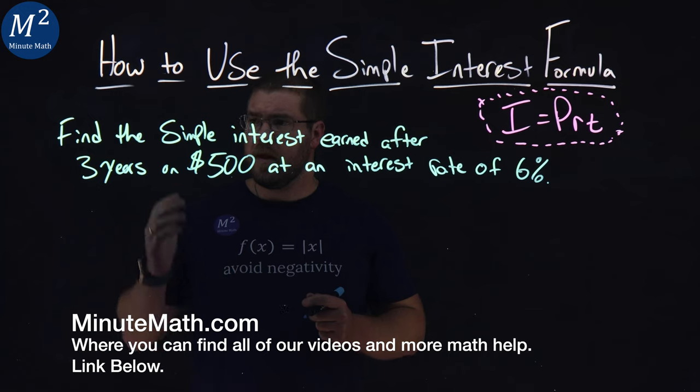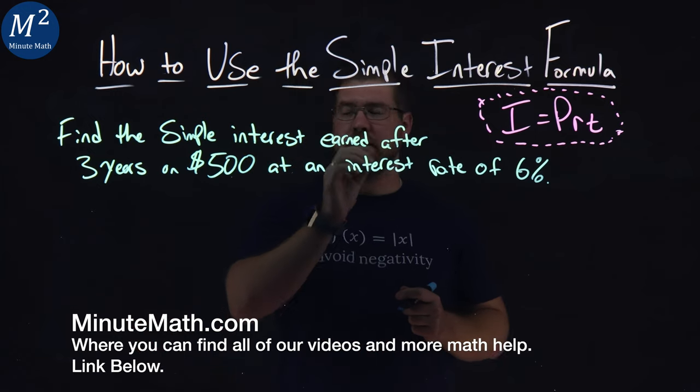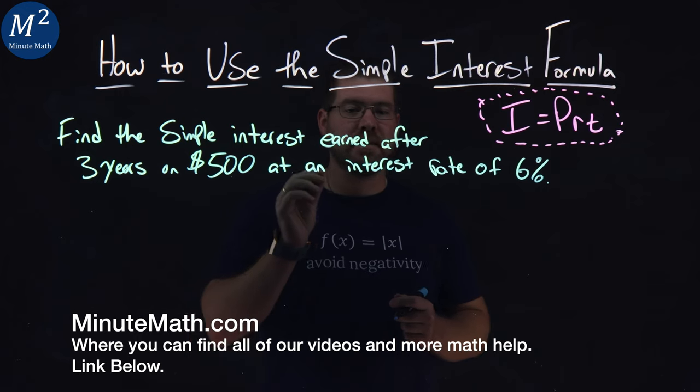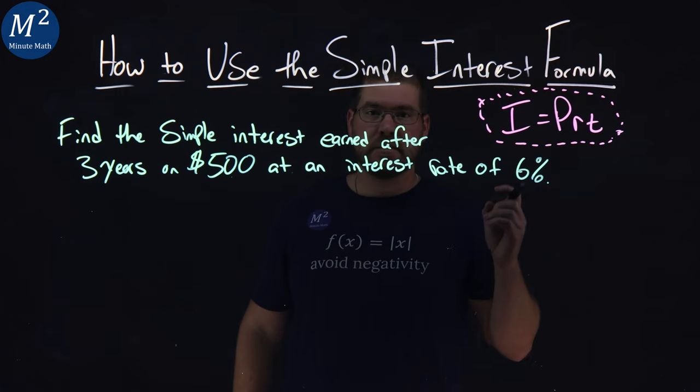We're given this problem here. Find the simple interest earned after three years on $500 at an interest rate of 6%.